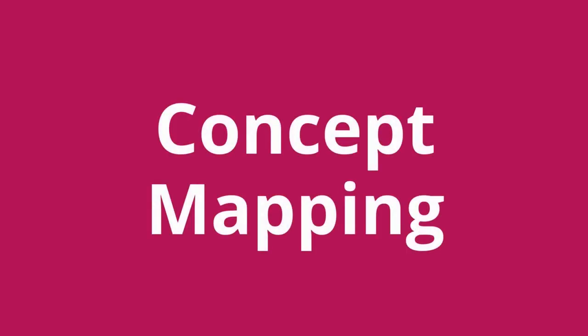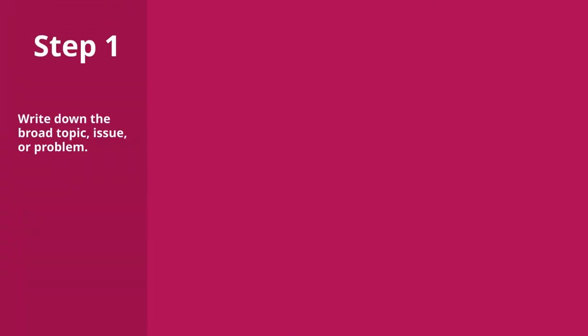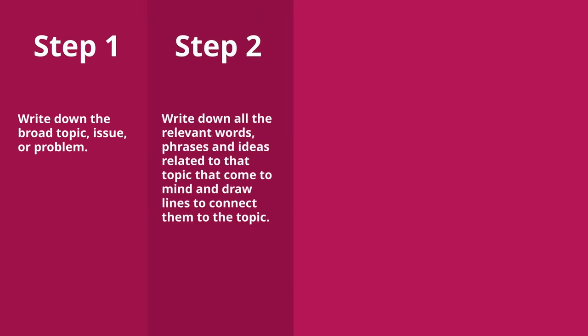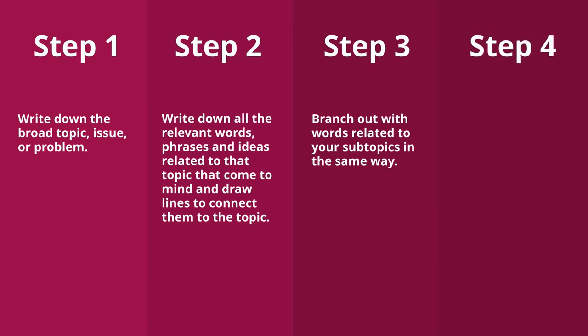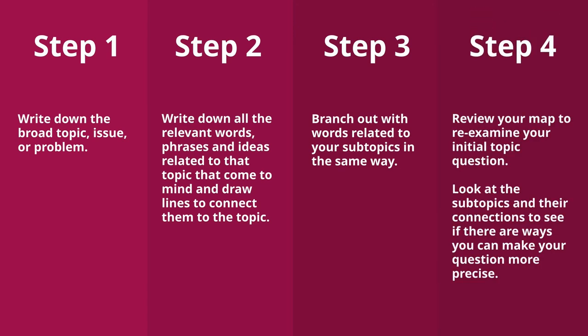Here's how to use concept mapping. A concept map or mind map is a technique where you connect your topic to related words. To create a concept map of your topic: Step 1, write down the broad topic, issue, or problem. Step 2, write down all the relevant words, phrases, and ideas related to that topic that come to mind and draw lines to connect them to the topic. Step 3, branch out with words related to your subtopics in the same way. And Step 4, review your map to re-examine your initial topic question.